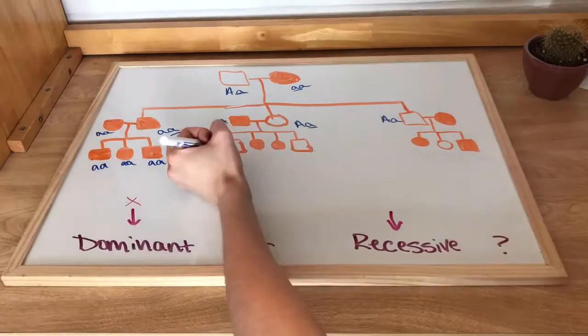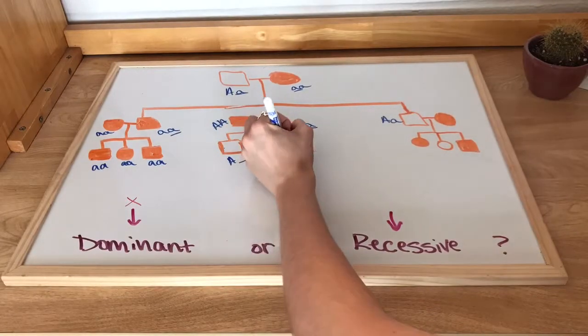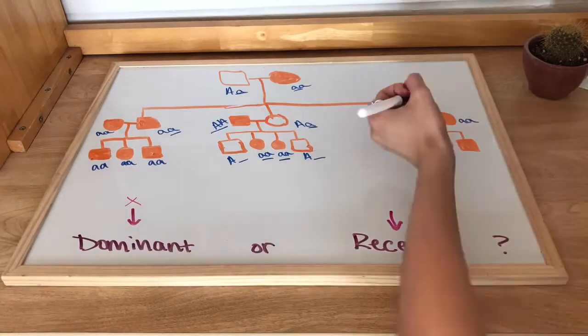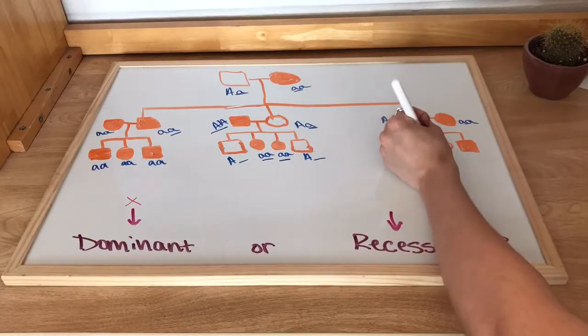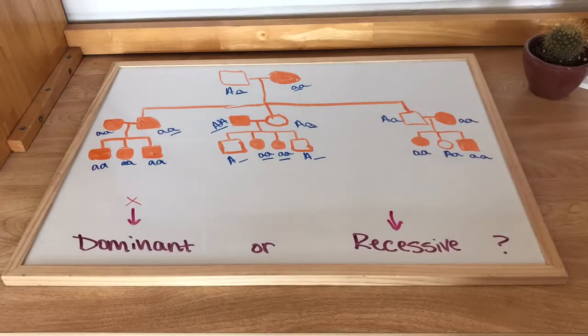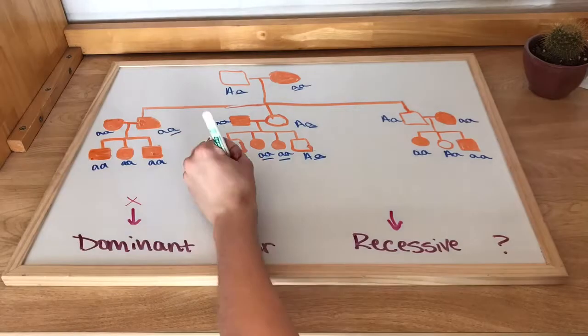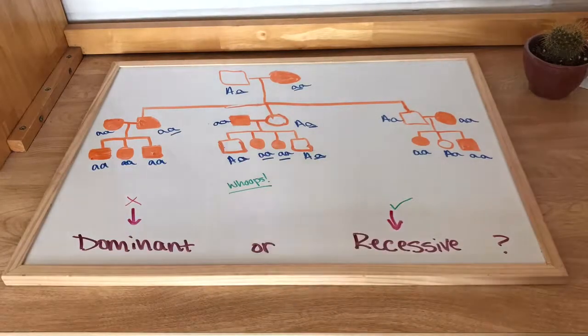Now filling in this F1 generation, I kind of really messed up, which I account for later, but it just goes to show you that you can do this all the time and still not get it perfect 100% of the time. But I do correct myself, and I do find out that, hey, that middle family is a possibility, which then goes to show that recessive is a possibility for this trait.